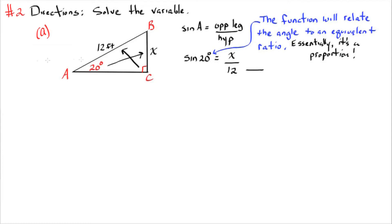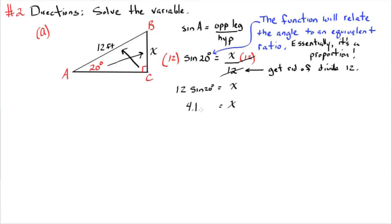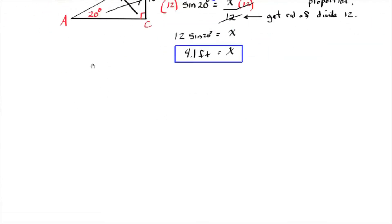The function will relate the angle to an equivalent ratio. Essentially, this is a proportion. So I want to solve for x by getting rid of 12 by multiplying. That's the inverse of dividing. And I go to my calculator. 12 times sine 20. And I get 4.1 feet. Be careful on the calculator and make sure you're in degrees, not radians. Box that in.